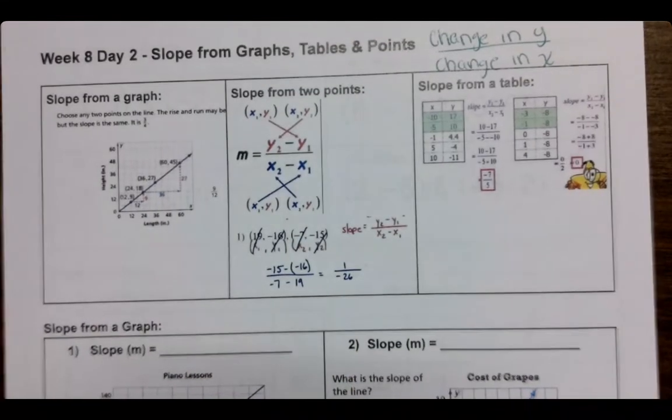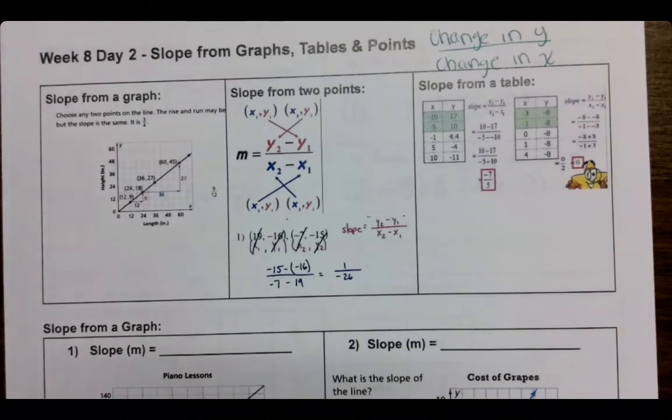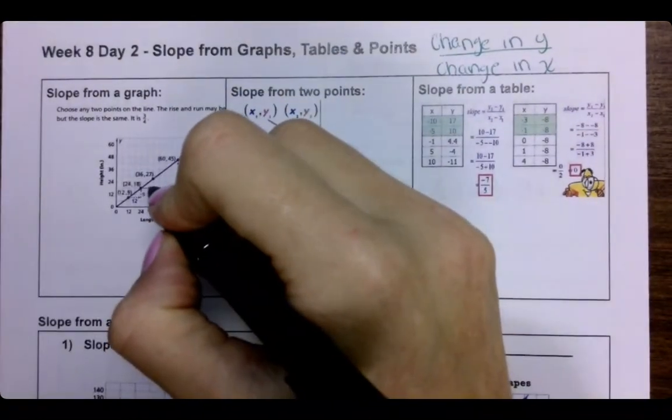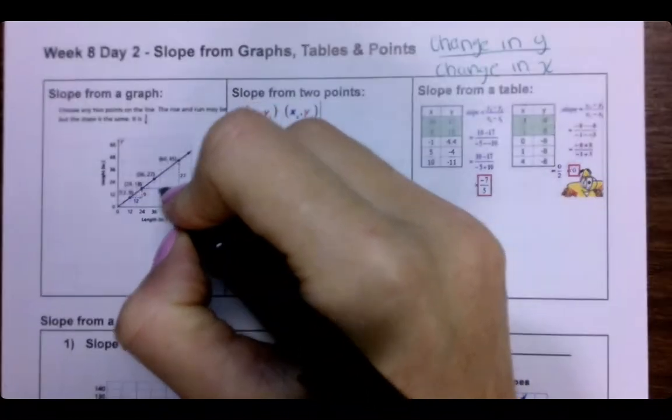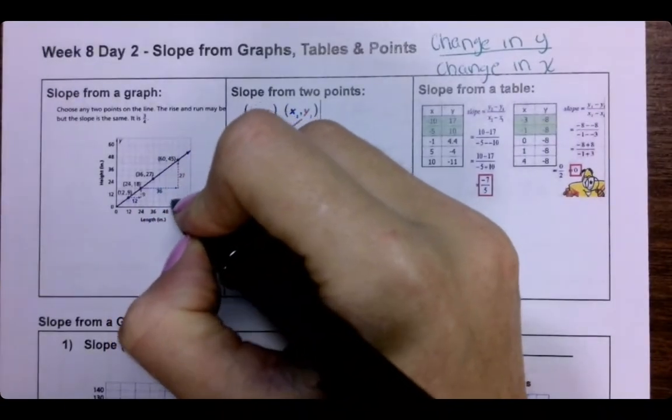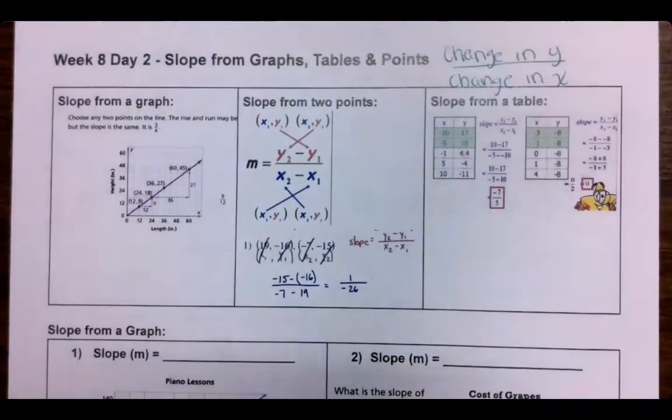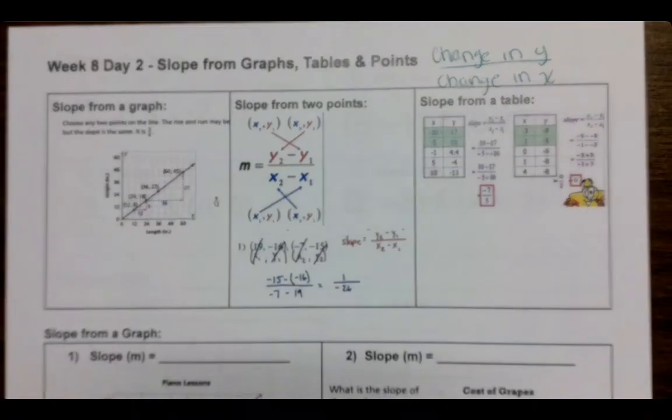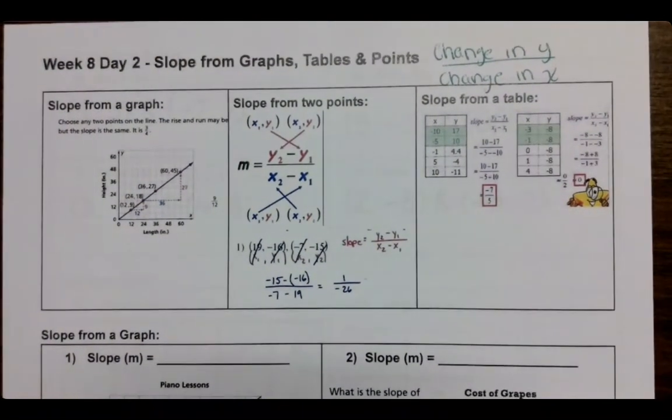So from a graph, we kind of did this last class, but just so you know, we are drawing our lines and then we are counting boxes, but keeping in mind what our lines are going by, what our axes are going by.